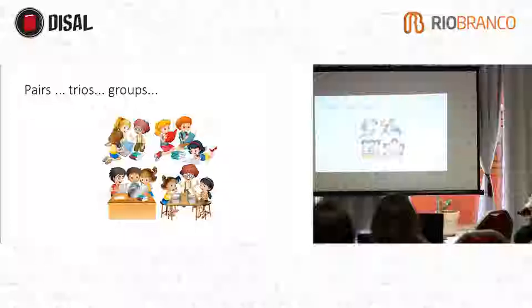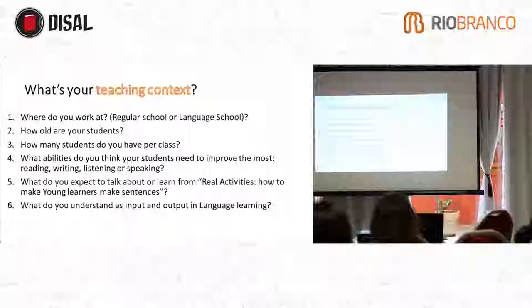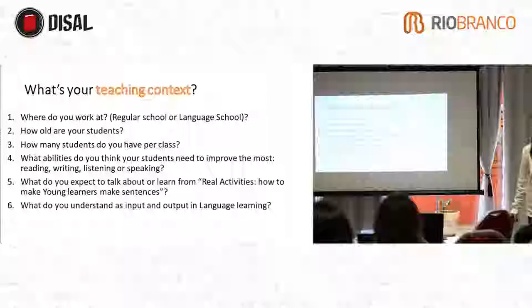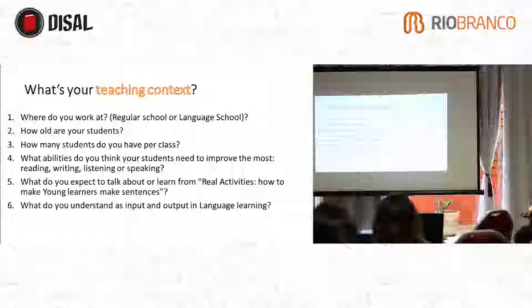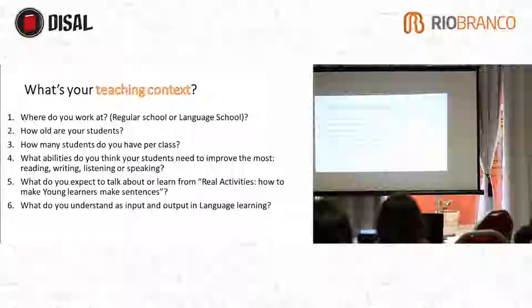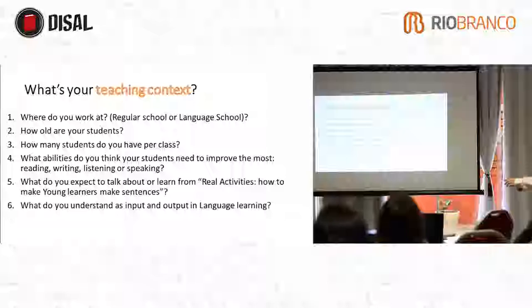To get started, we can work in pairs, trios, or groups. If the teacher asks everybody, only the best ones would answer. So the questions here are: number one, where do you work — at a regular or language school? How old are your students? How many students per class? How many classes? What abilities do you think your students need to improve the most — reading, writing, listening, speaking? And number five, what do you expect to learn from 'Real Activities: How to Make Young Learners Make Sentences,' and what do you understand about input and output in language learning?